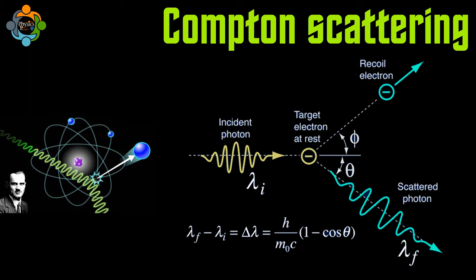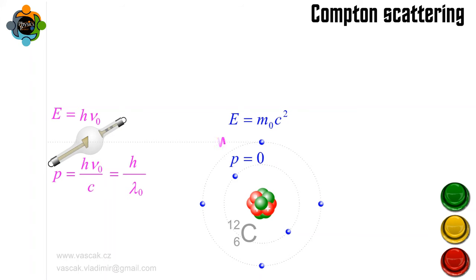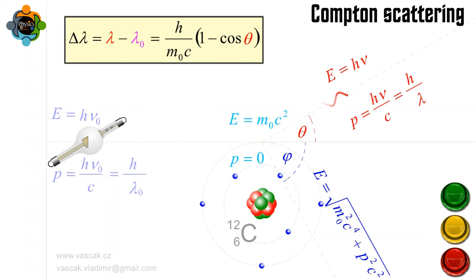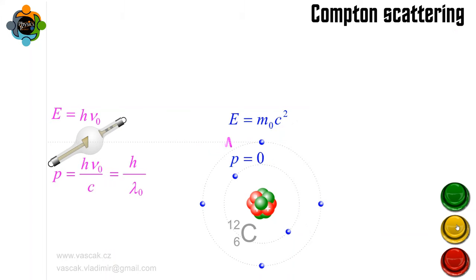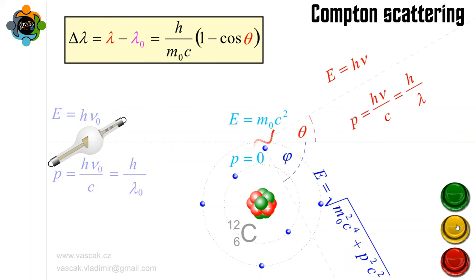Compton Scattering is a fundamental principle in physics that describes how photons interact with matter. When a high-energy photon collides with an electron, the photon loses energy and changes direction. This process is crucial in understanding the behavior of light and matter at a microscopic level.